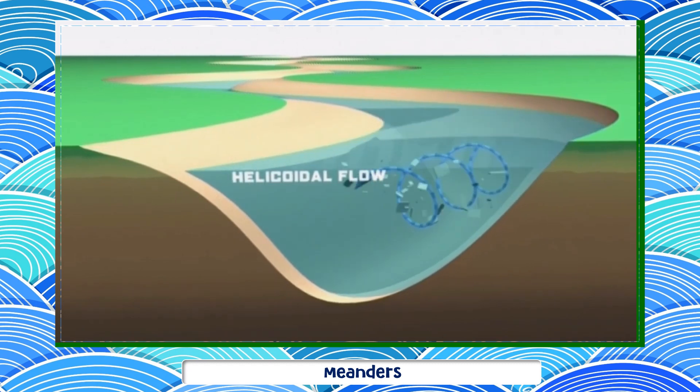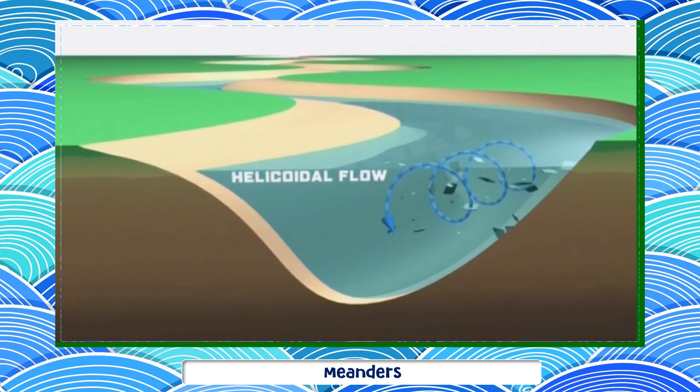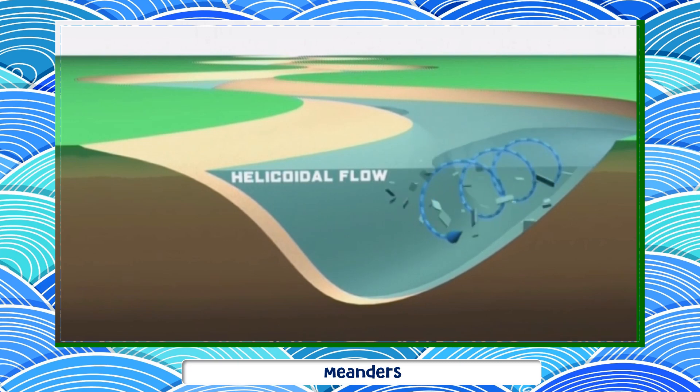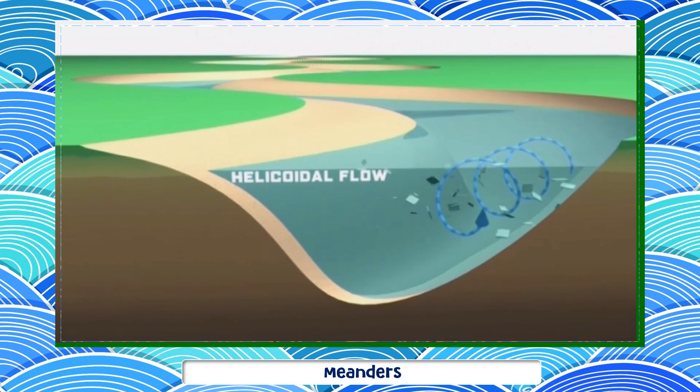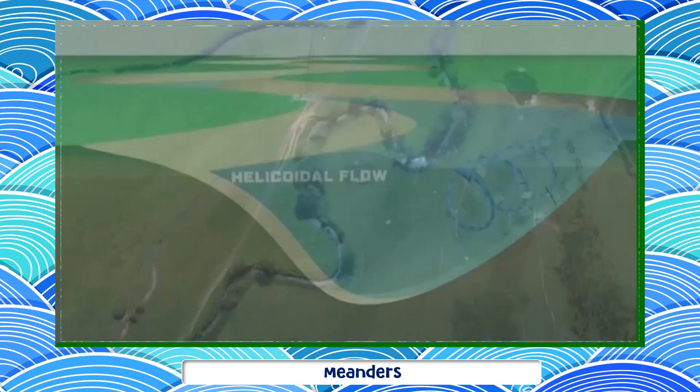to the slip-off slope of the next. This process makes the meanders bigger and assists in their slow migration downstream.